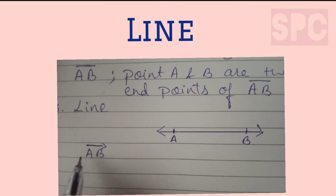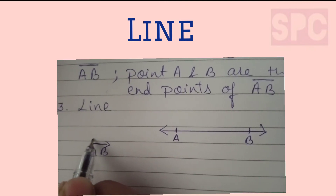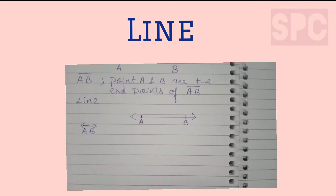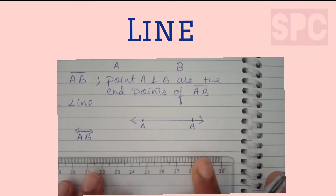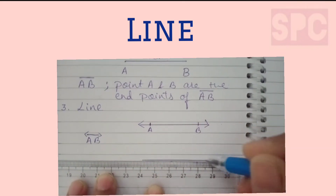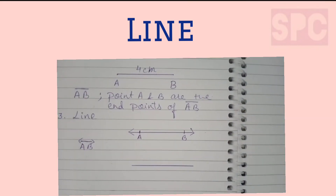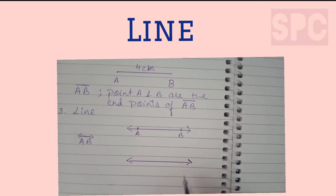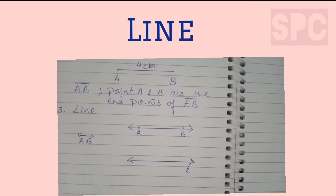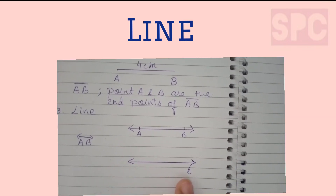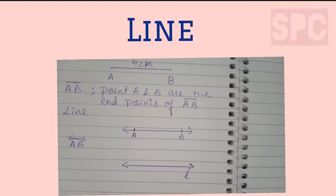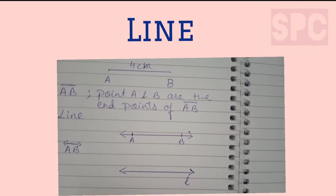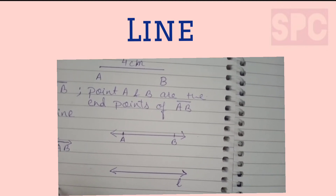We write AB with a line symbol showing two arrows on both sides. You can also denote any line using small letters — for example, line l, line m, or line n. Any small letter can be used to represent a line.